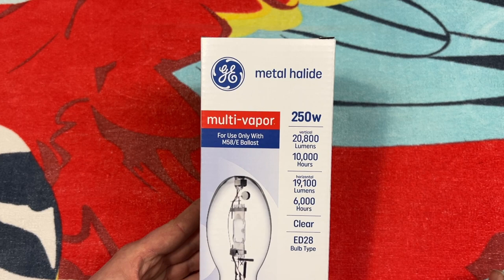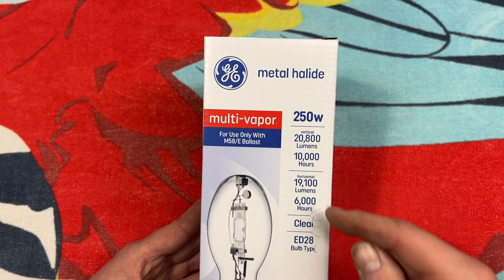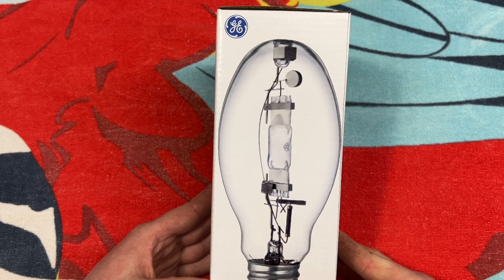On the front of the packaging, obviously metal halide multi-vapor used with a ballast. That's very important. 250 watt. It's interesting and nice that they note here on the front that whether you use it vertical or horizontally, there is a lumen difference.